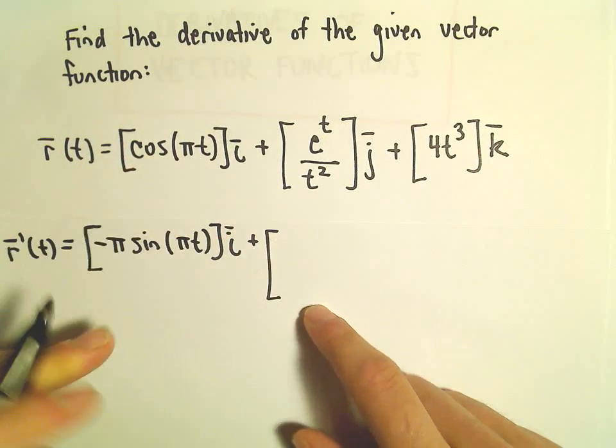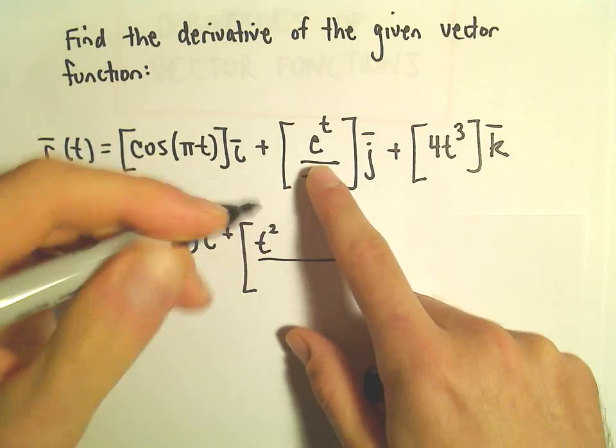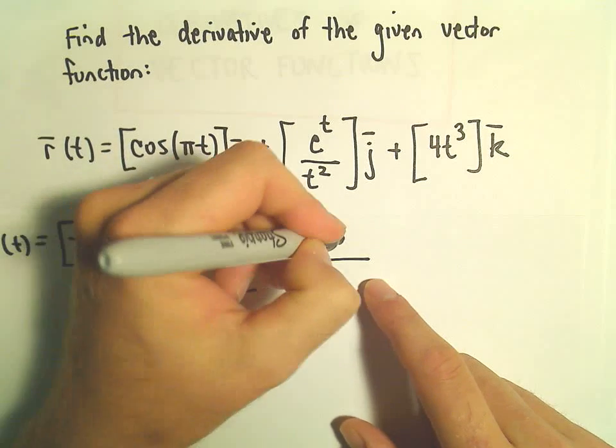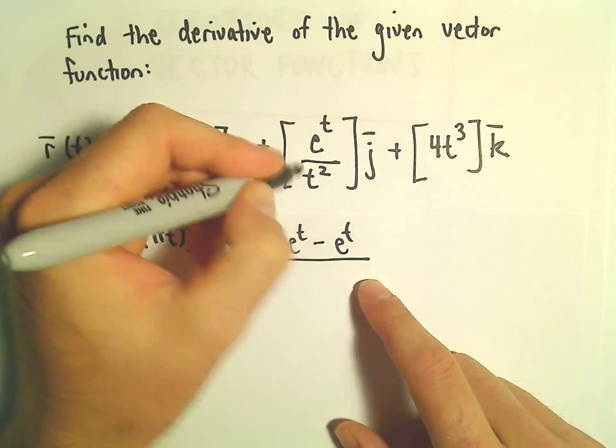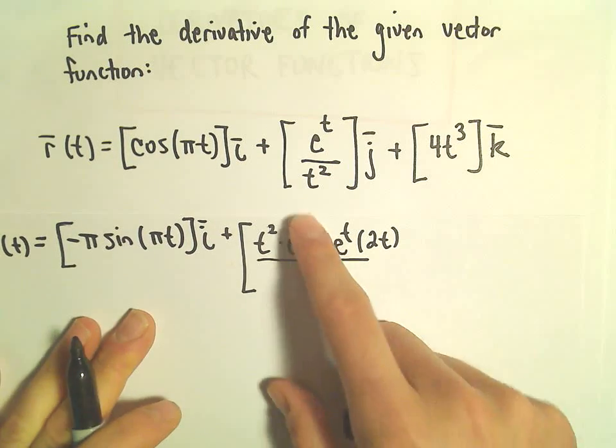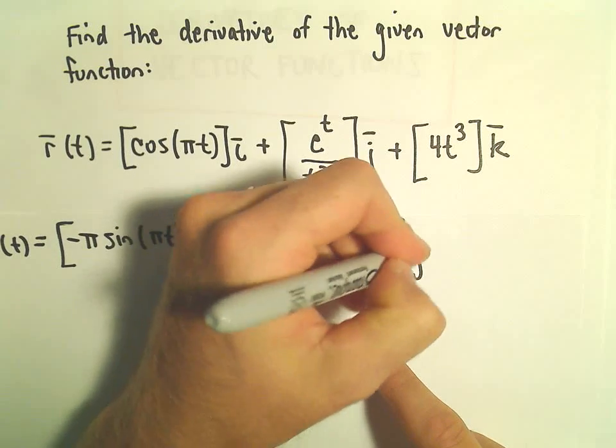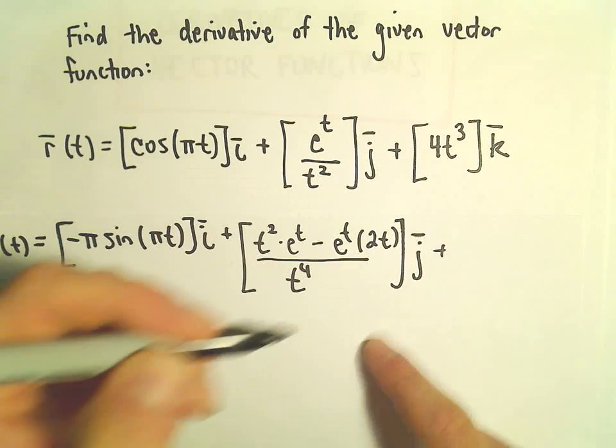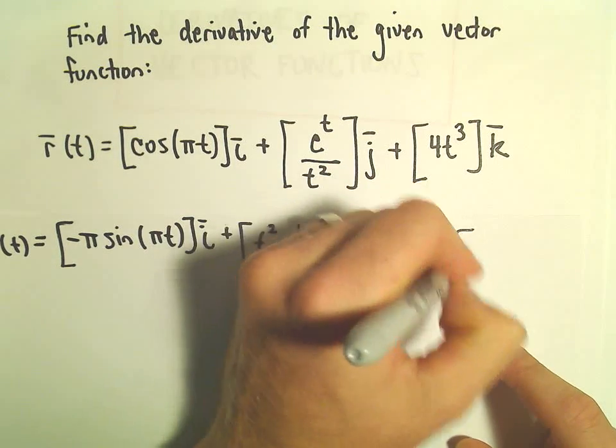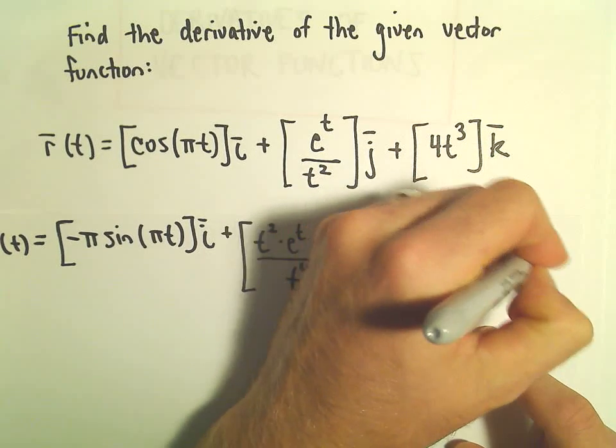Plus, for the second part, we can use the quotient rule. So we'll get the denominator, the derivative of the numerator will just be e to the t, minus the numerator times the derivative of the denominator, which will be 2t, all over the denominator squared, which is t to the fourth, times j. And then if we take the derivative of 4t cubed, we'll get 12t squared times k.